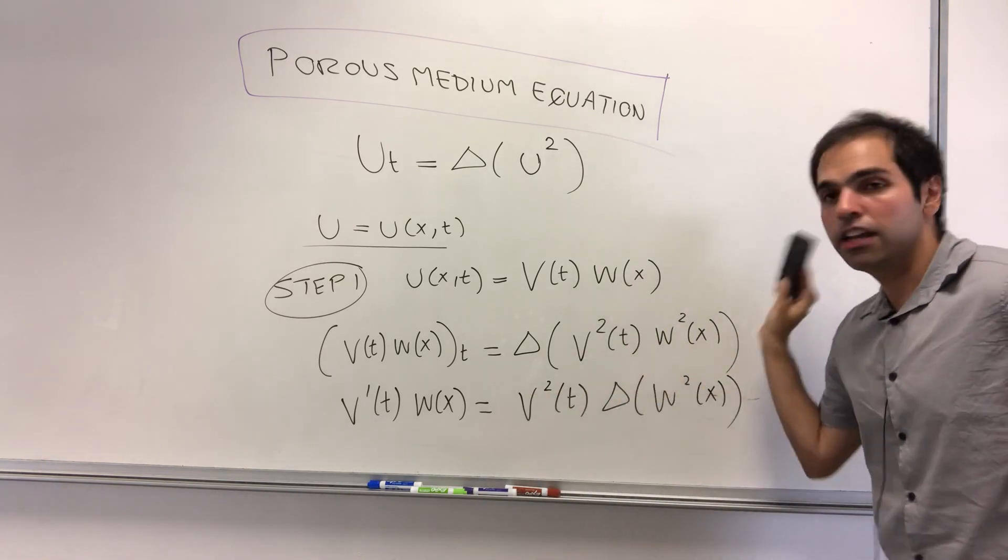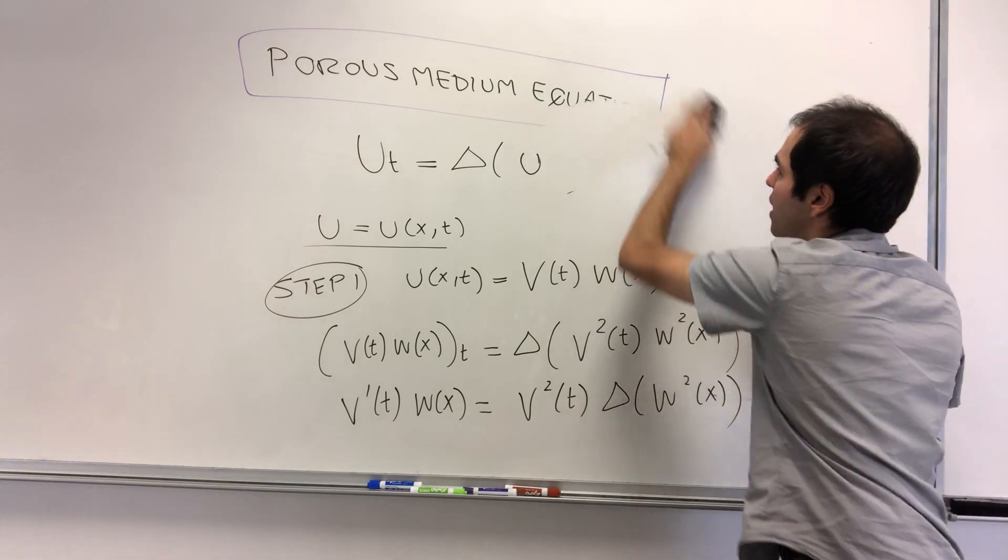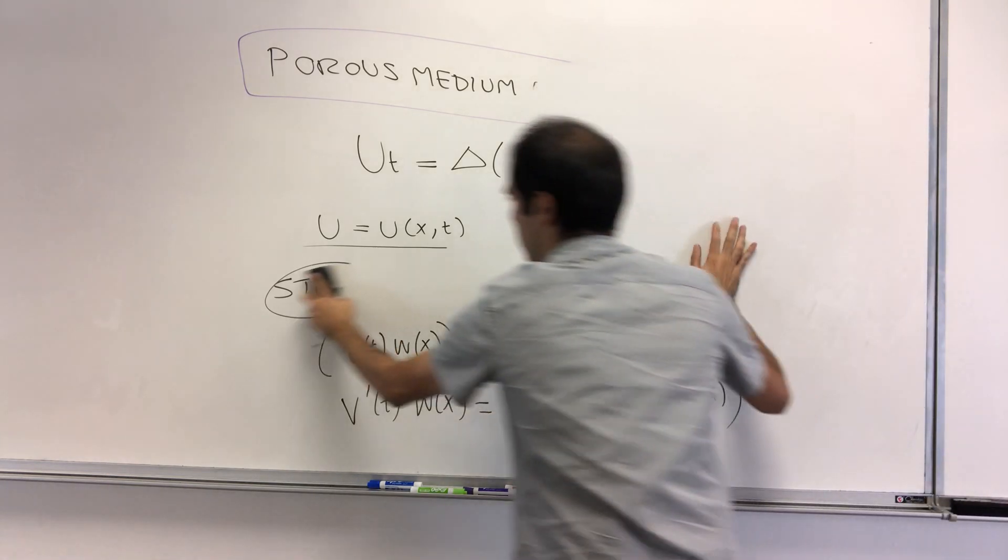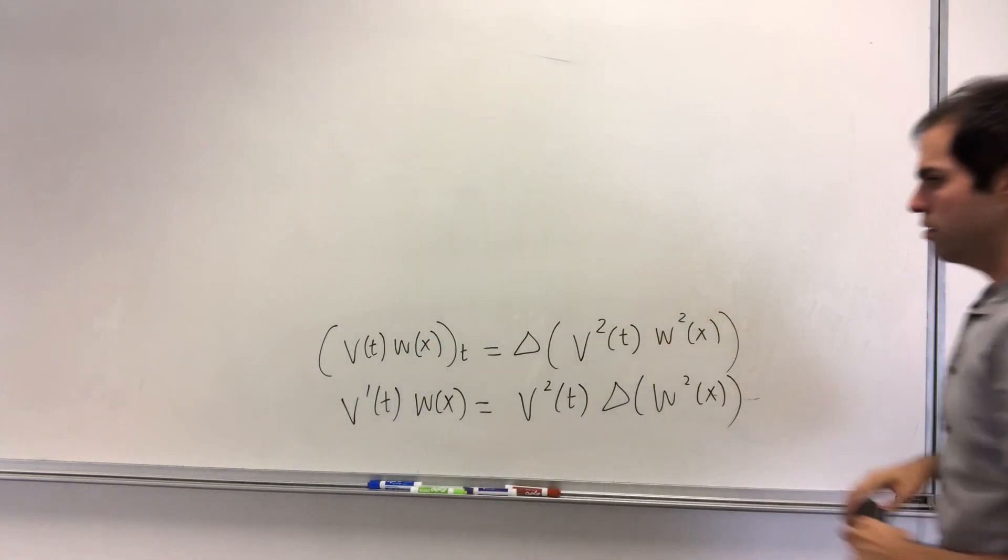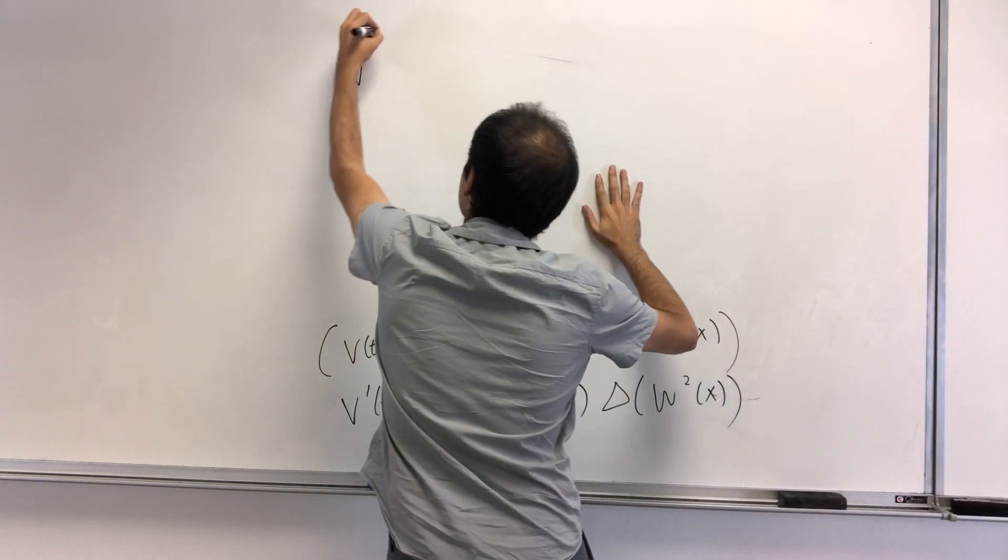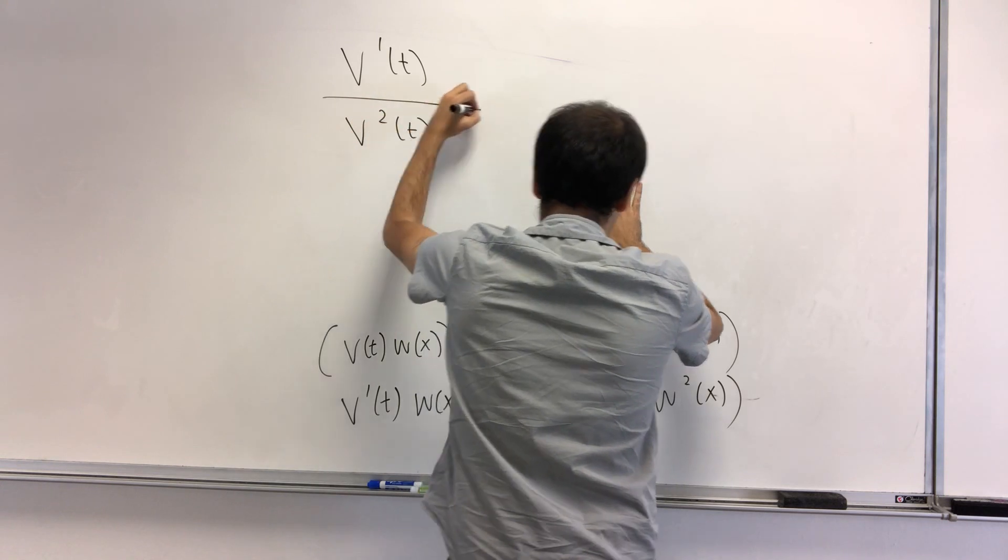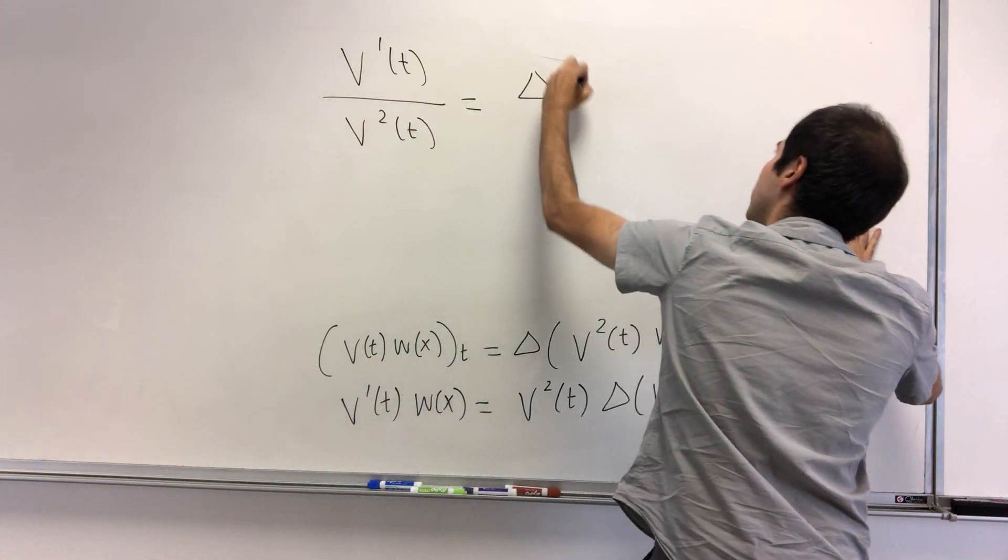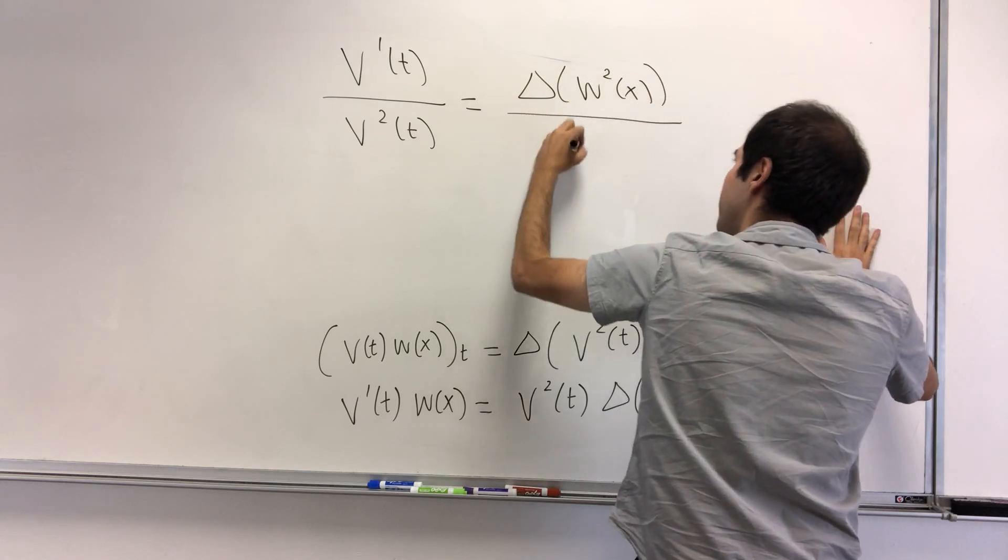And well, now let's put all the t's on one side, all the x's on the other side. So we get that v prime of t over v squared of t equals Laplacian of w squared of x over w of x.